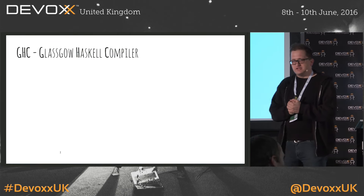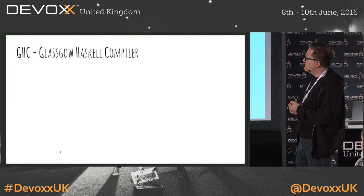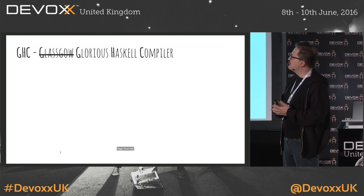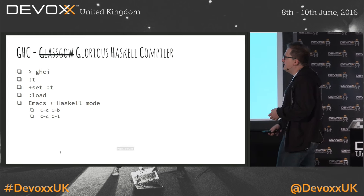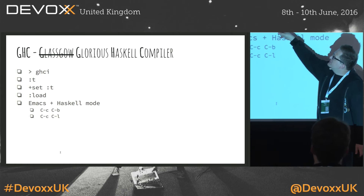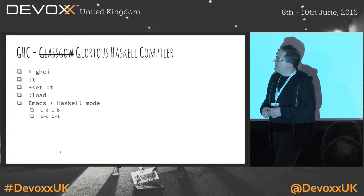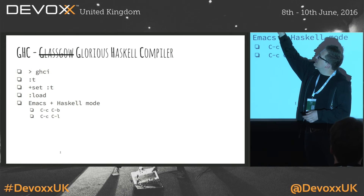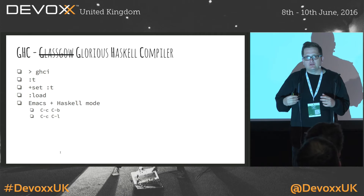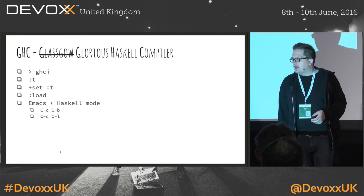Quickly, Haskell is a language which has a standard with different versions, and different implementations. Probably the most well-known one is GHC — the Glasgow Haskell Compiler, also known as the Glorious Haskell Compiler. If you just download it, you can fire up a REPL by just typing GHCI, and it gives you a REPL to play around with the language. You might use the command ':set +t', which will by default tell you the type definitions when you type something into the REPL.